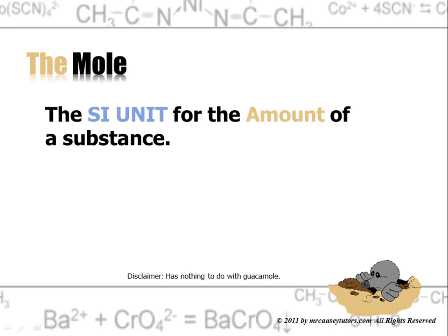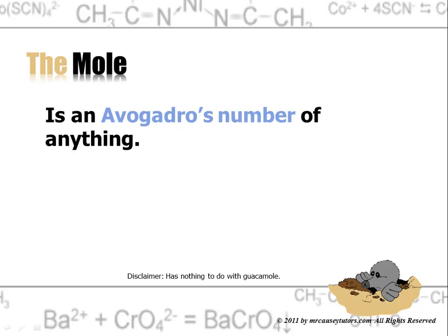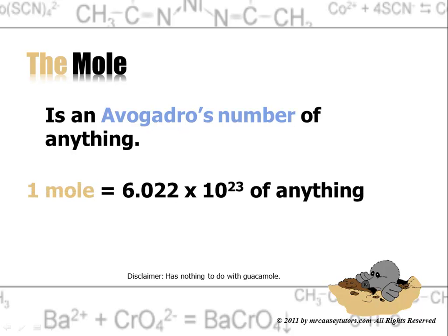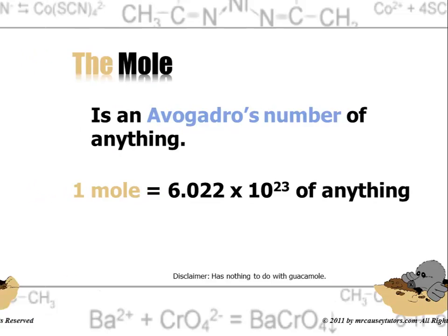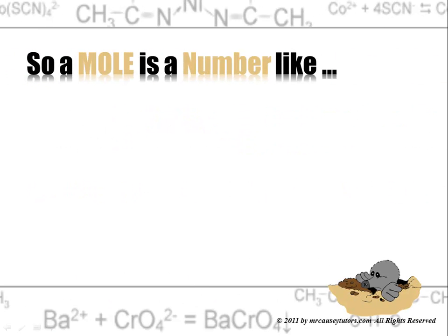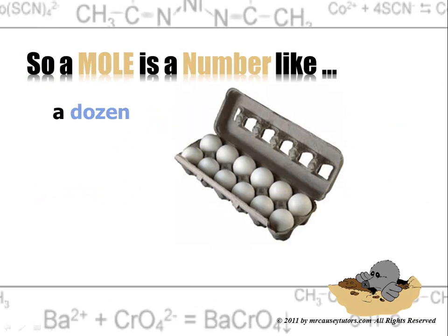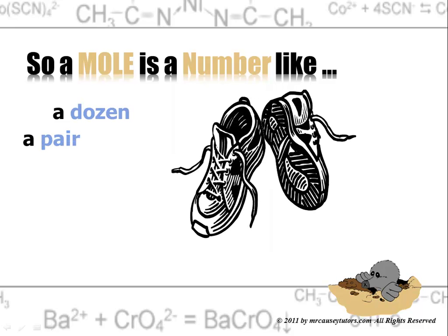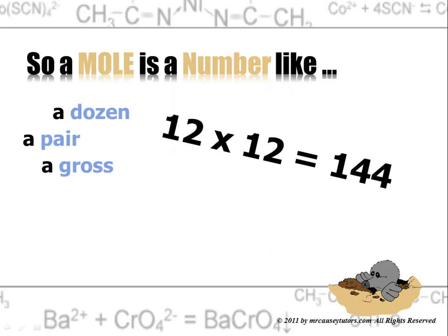And so a mole is the SI unit for the amount of a substance. It is an Avogadro's number of anything. One mole equals 6.022 times 10 to the 23 of anything. And so a mole is a number like a dozen is 12, a pair is 2, or a gross is 144.